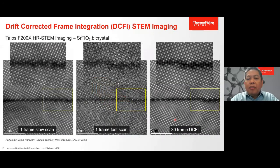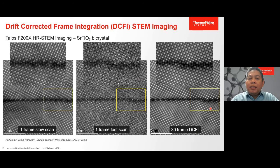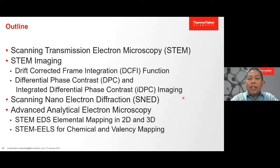Another example shows the power of the DCFI technique applied to image strontium titanate b-crystals. Using slow scan frames gives a nice image with high intensity-to-noise ratio, but distortions appear due to slow scan. Reducing scan time eliminates distortions, but the image quality is lower. That's why the DCFI technique — summing all images, applying drift correction, and combining them — gives a very nice image with very high intensity-to-noise ratio and free from distortions.